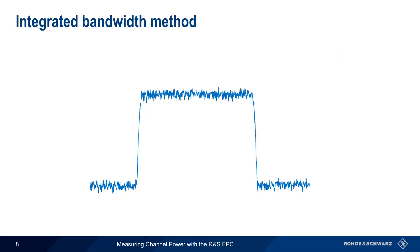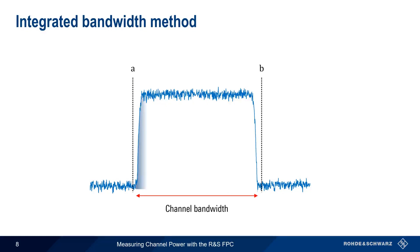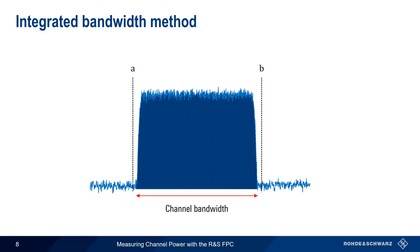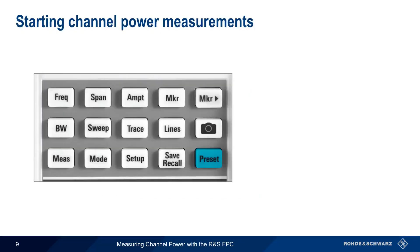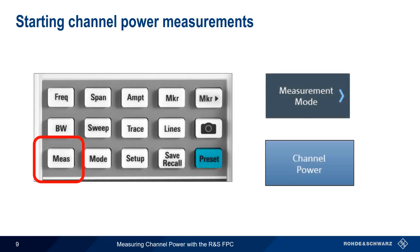The more common method of measuring channel power using a spectrum analyzer is the integrated bandwidth method. Here, we first need to set the lower and upper channel limits. The analyzer then sweeps across this channel bandwidth and obtains a channel power result by means of integration. To access channel power measurements on the FPC, first press the Measure hard key, then press Measurement Mode and select Channel Power.